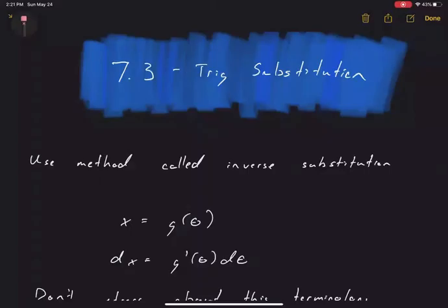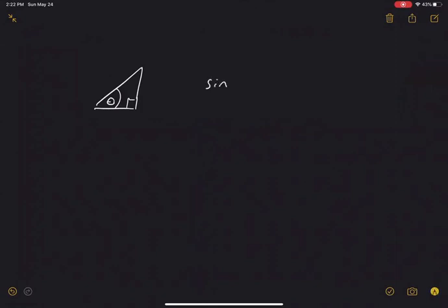This video is for section 7.3, trig substitution. First, important for this section is some basic knowledge of trig. We need to be comfortable with the definitions of the basic trig functions. If I have an angle theta, we're always going to be dealing with right triangles. Remember the definition of sine theta — it's opposite over hypotenuse.